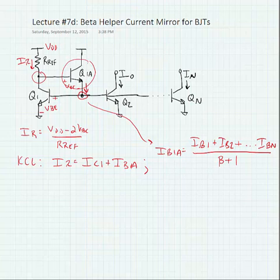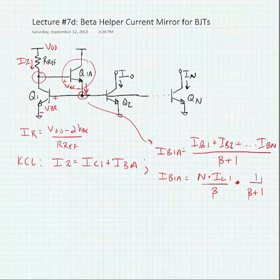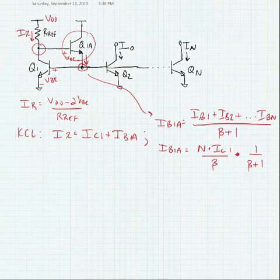We can simplify this and say that IB1A is equal to N times IC1 over beta plus one, times one divided by beta plus one. Let's make some substitutions.